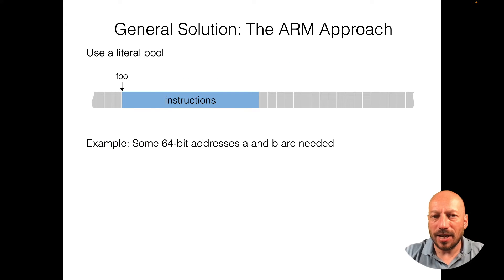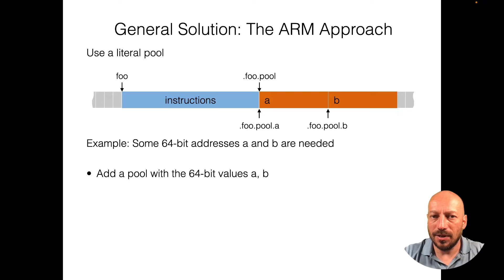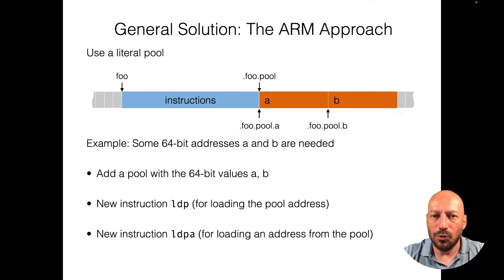The ARM architecture faces basically the same challenge: they also use 32-bit instructions, and for function calls or accessing global variables they first have to load literals into a register. Their elegant solution uses a so-called literal pool — they make copies of values close to the instructions that require them, and then have additional instructions for loading the pool address into a register and for fetching values from the pool into a register. I will show you how we can do basically the same on the ULM.